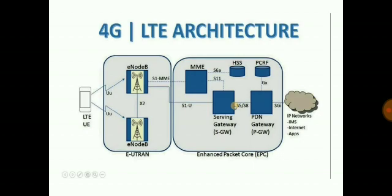user equipment and eNodeB, i.e. evolved node B. Whereas the evolved packet core consists of mobility management entity (MME), serving gateway, packet data network gateway, home subscriber server, and policy and charging rules function.